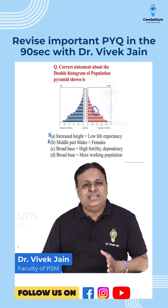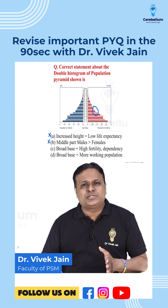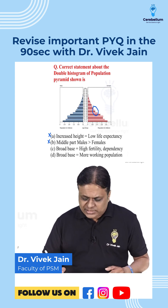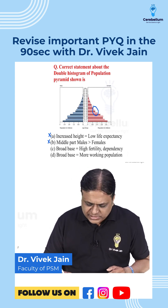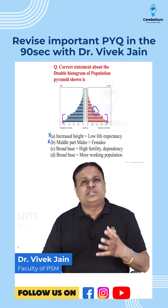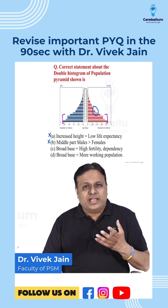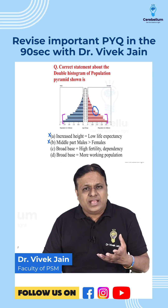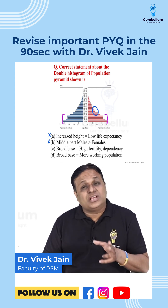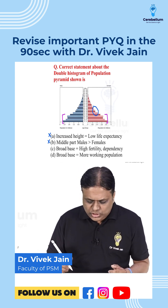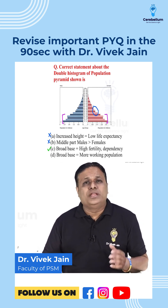Look at choice C: broad base means high fertility and high dependency. This is correct, friends, because a broad base means more children, more younger population, higher fertility, and a higher young age dependency ratio. So this statement is correct.